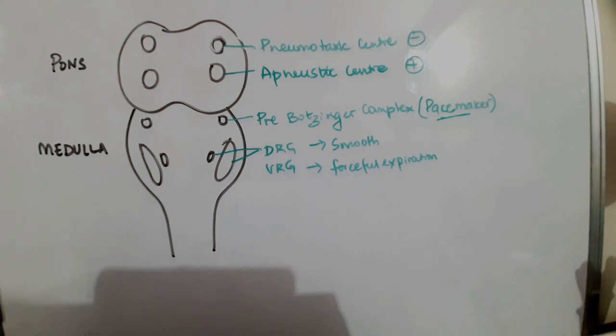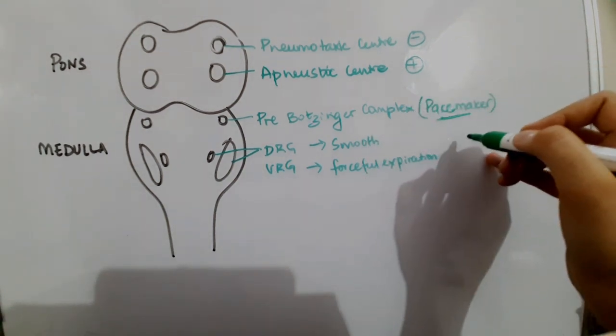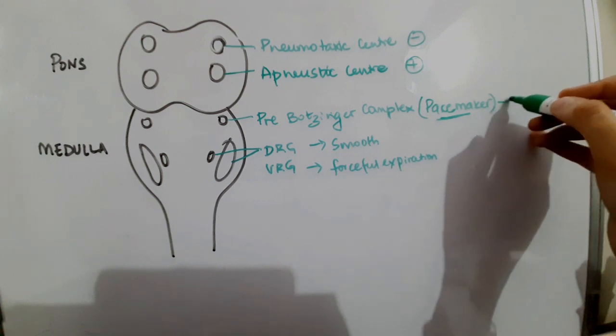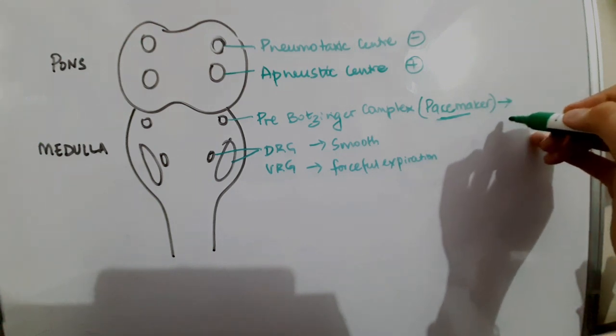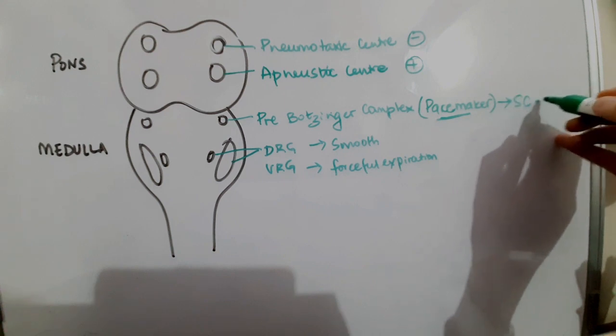Now let us look at how inspiration is initiated. Any action in our body is initiated by the pacemaker, which in this case is the pre-bötzinger complex. The pre-bötzinger complex gives the signal to initiate inspiration.